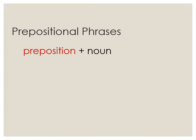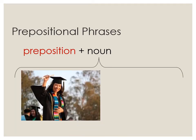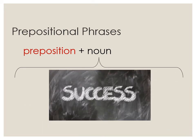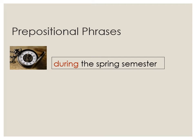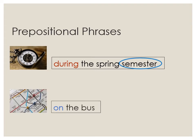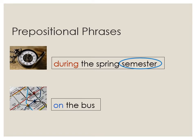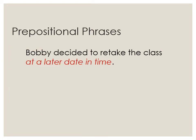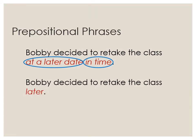A prepositional phrase combines a preposition with a noun — a person, place, thing, or idea. For example, "during the spring semester" is a prepositional phrase: "during" is the preposition, while "semester" is the noun. Another example is "on the bus" — "on" is the preposition, while "bus" is the noun. Stringing too many prepositional phrases together in a sentence can make it wordy. For example, "Bobby decided to retake the class at a later date and time" strings together two prepositional phrases that could be replaced with a single word: "later." "Bobby decided to retake the class later" is less wordy.